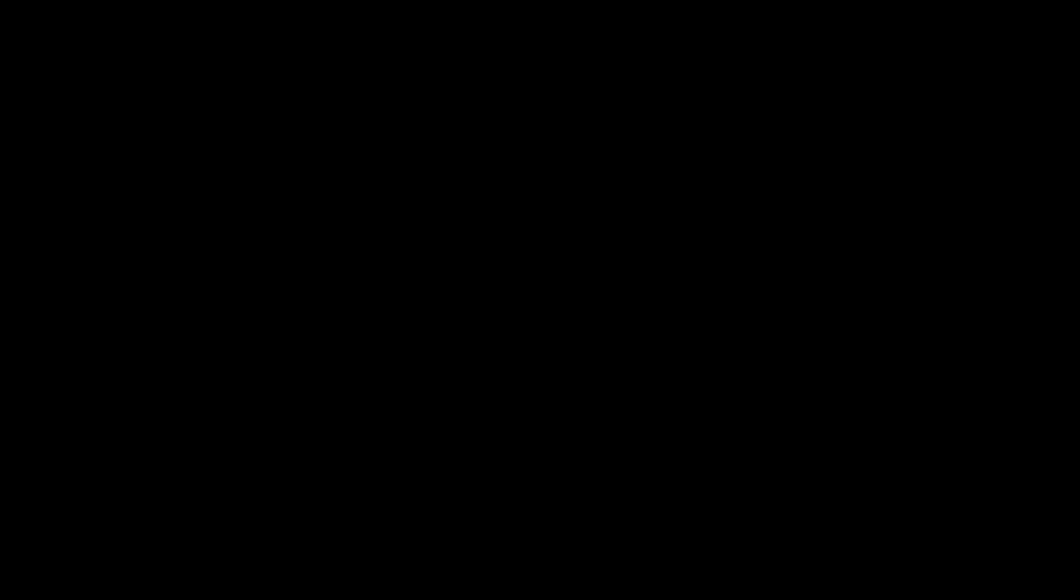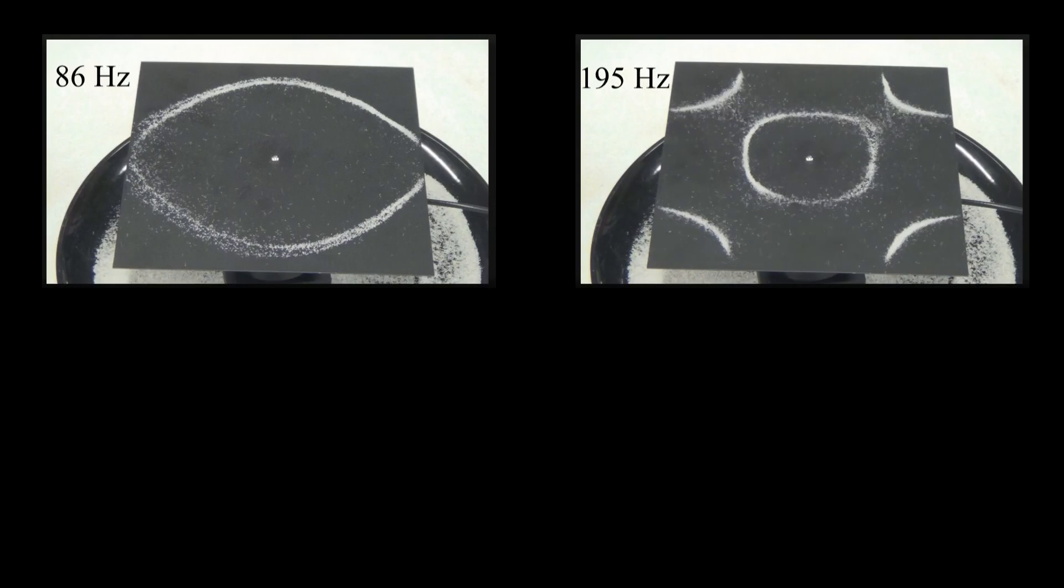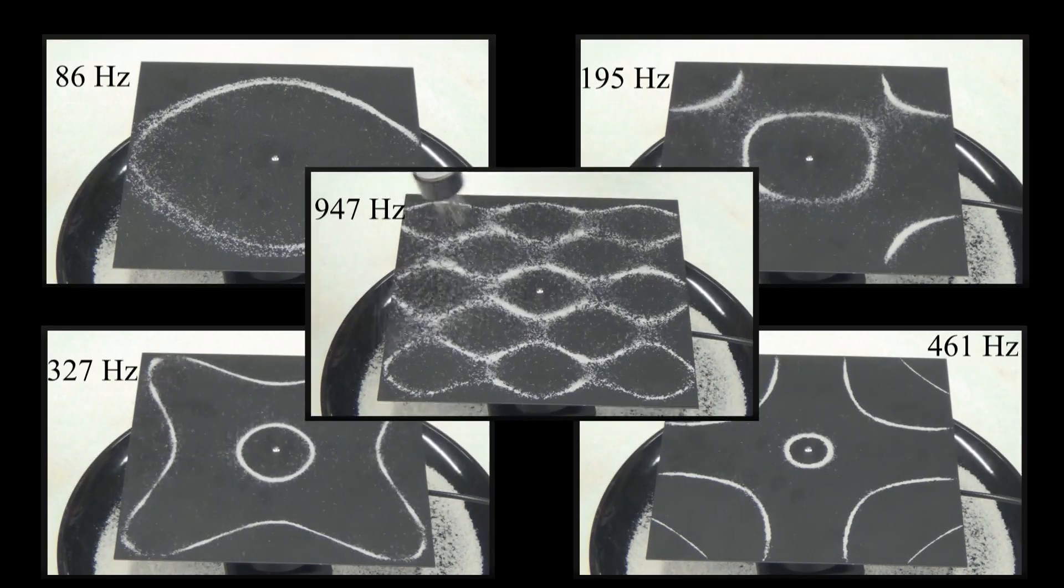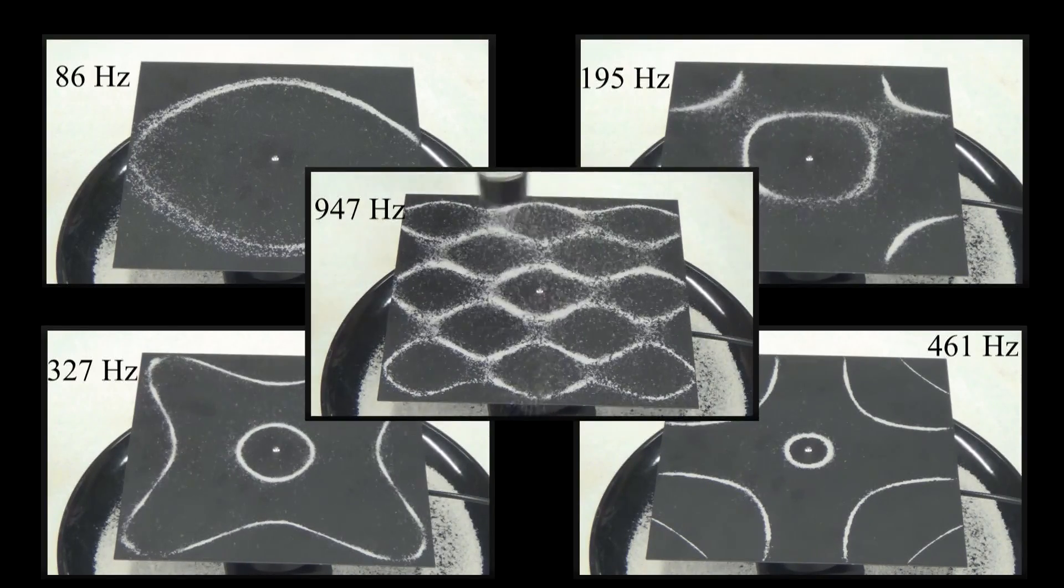Now, let's look at a square plate. As you may notice, the first few mode shapes at lower frequencies are interesting, but not nearly as complex as those shown at the higher frequencies. Increasing the frequency at which the system vibrates increases the complexity of the mode shapes.